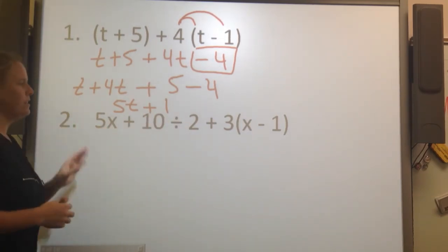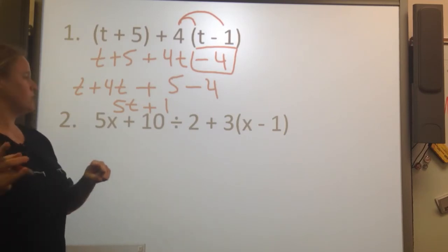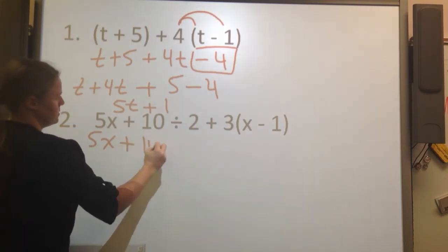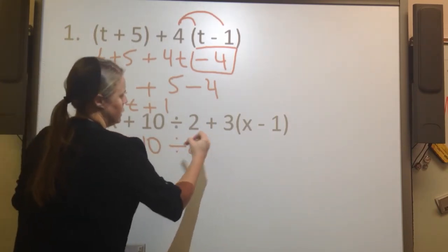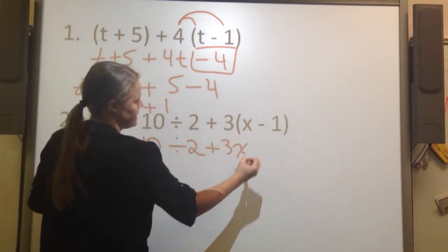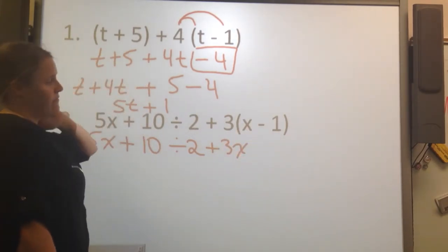So for this one, we're getting a little bit trickier. We're going to distribute first. So I'm going to rewrite my expression, and then I'm going to distribute. 3 times x is 3x.